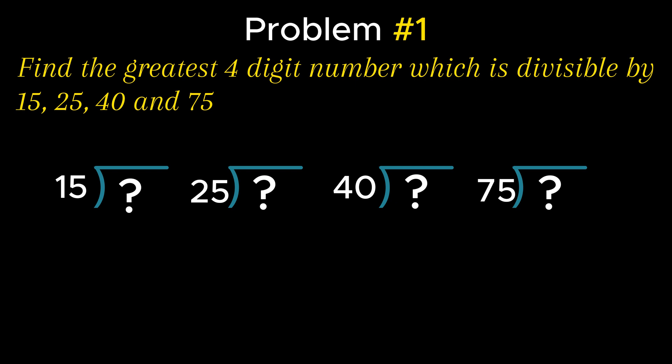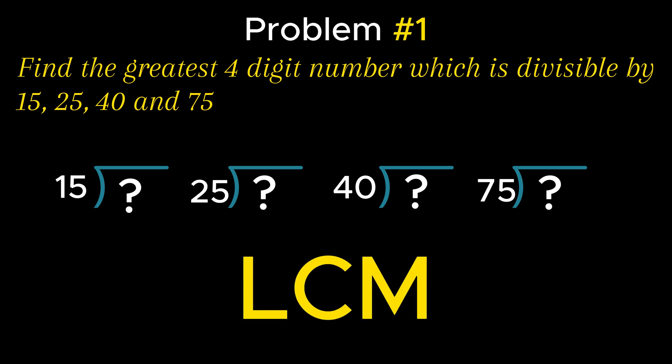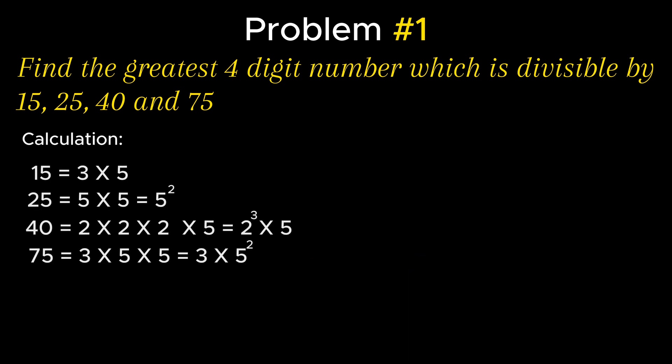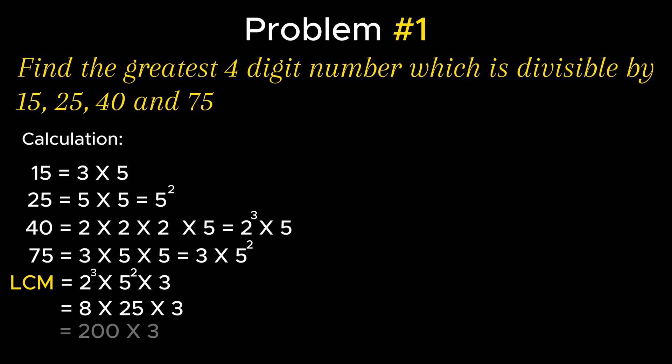Thus the logic to solve the problem is LCM. Now to calculate the LCM, the product of each factor with the highest powers is considered, which is equal to the product of 2 raised to the power 3, and 5 raised to the power 2, and 3, which is simplified as 8 × 25 × 3, which is further simplified as 200 × 3.